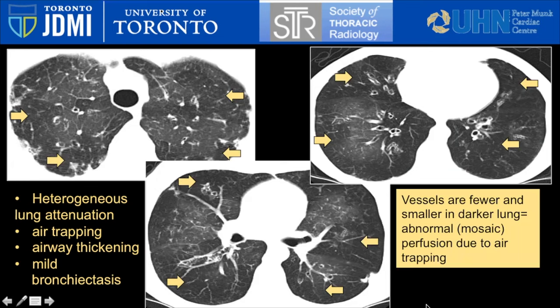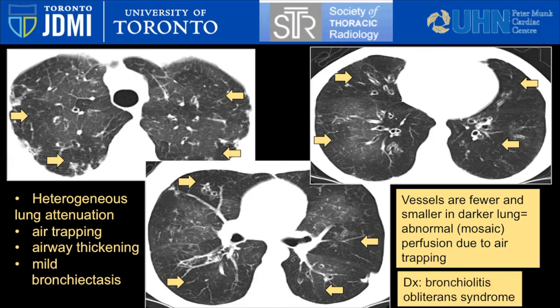You might ask why an airway abnormality would cause abnormality in perfusion. In areas of chronic gas trapping, those areas of lung are not participating normally in gas exchange, so the body starts to reduce blood flow to those areas — what we call reflex vasoconstriction. The blood vessels over time get smaller in areas of chronic gas trapping. This was a case of bronchiolitis obliterans syndrome, a manifestation of graft-versus-host disease in a patient post bone marrow transplant.